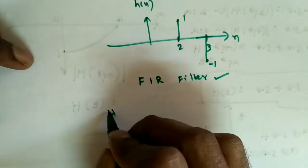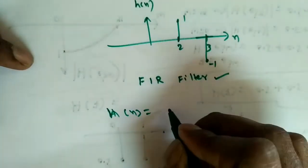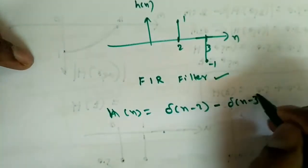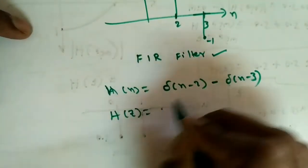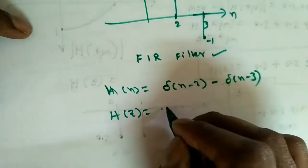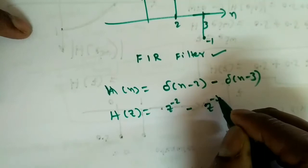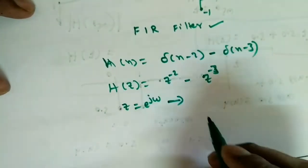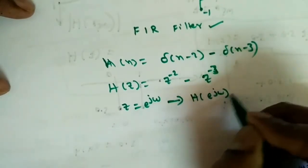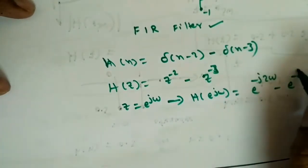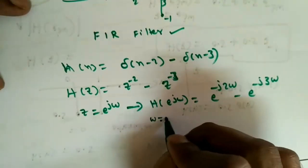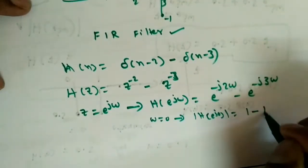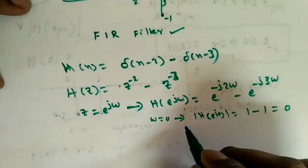Now we check whether it is low-pass, high-pass, or band-pass. We can write h(n) as δ(n-2) - δ(n-3). Taking the Z-transform, H(z) = z^(-2) - z^(-3). To find the frequency response, substitute z = e^(jω), giving H(e^(jω)) = e^(-j2ω) - e^(-j3ω). At ω=0: the magnitude is |e^0 - e^0| = |1 - 1| = 0.